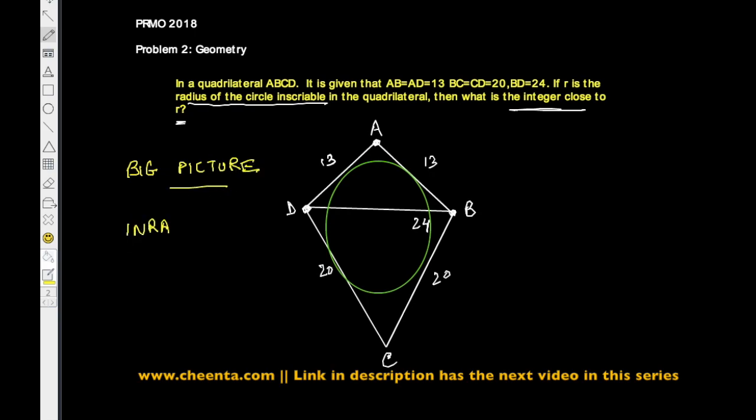The big picture is the following: the inradius of any polygon is related to the area of the polygon in a very simple way. If R is the inradius and delta is the area, then R times the semi-perimeter is always equal to the area of the polygon.